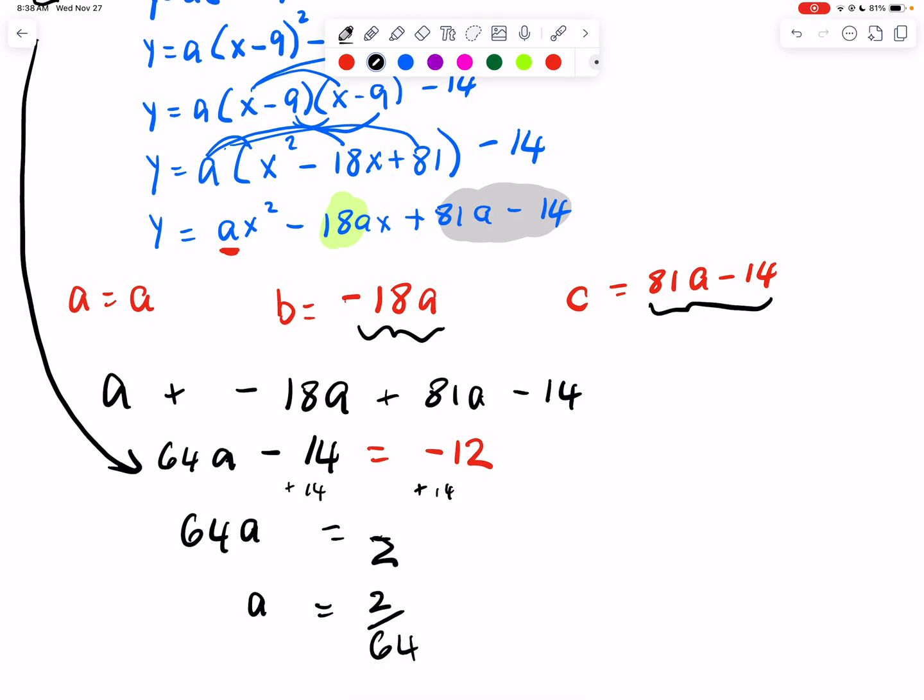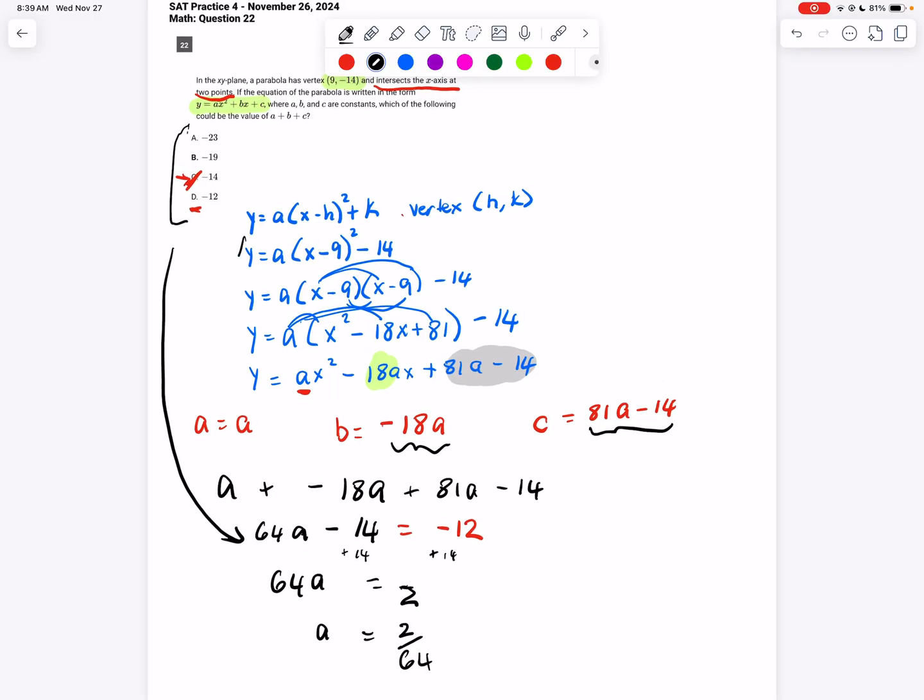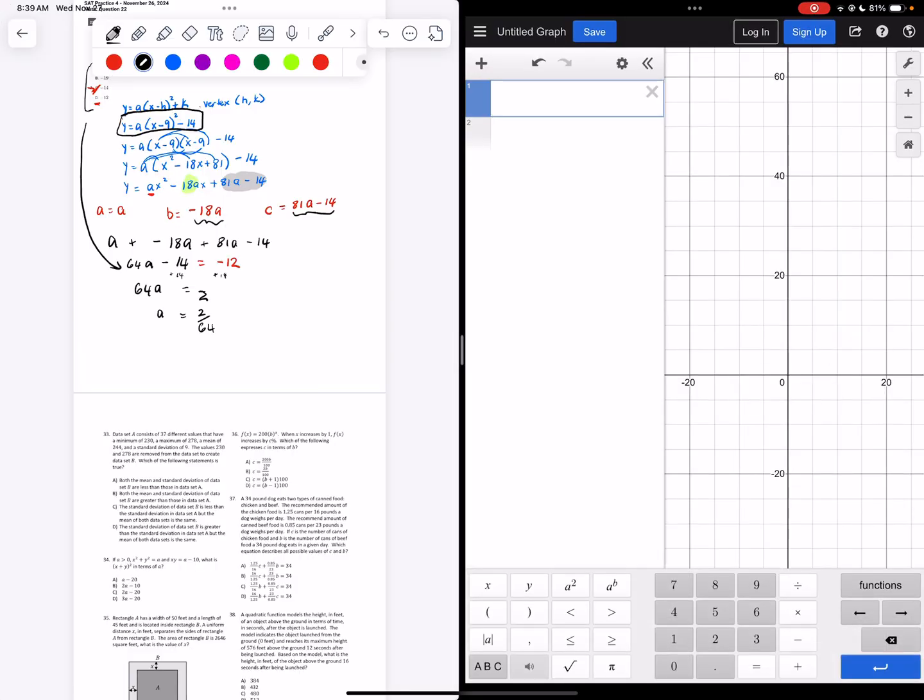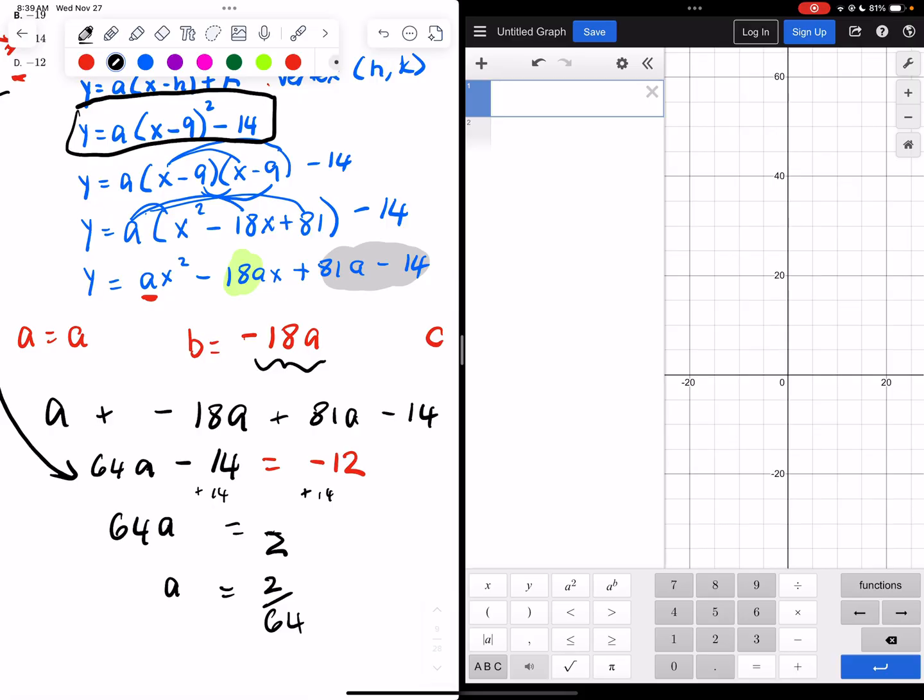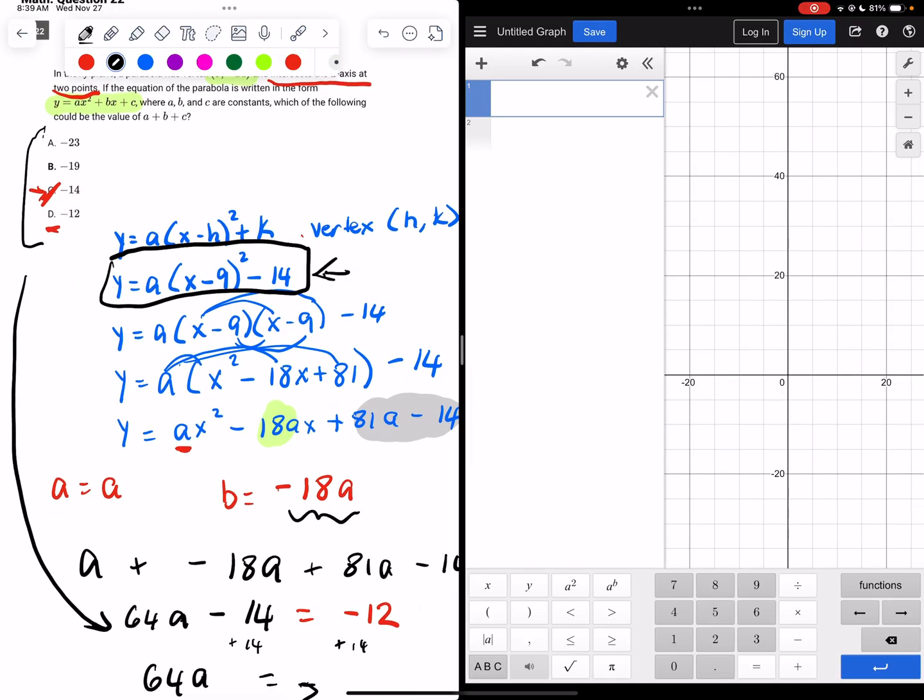But we do have Desmos, and we can now see if we plug this into Desmos as our a value, so into this very original function here, if we plug our a value as 2 over 64, does the function in fact have two solutions? So I'm going to try that out and see what happens. So let's delete that from the last thing. And we get, let's see here. So I'm plugging this thing in here, right there. Alright. So we have y equals 2 over 64. And then we can plug in everything else. So that is x minus 9 squared minus 14.